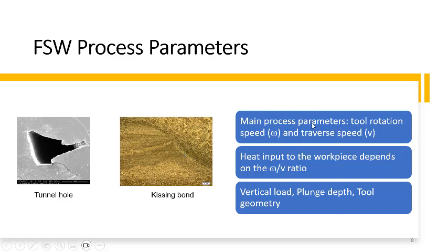It is important to optimize the rotation and traverse speed parameters before starting to join the material. Other process parameters include the vertical load applied, the plunge depth, and the tool geometry, which has also been found to have an effect on the quality of the joint.